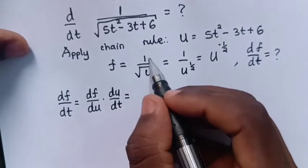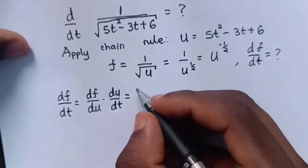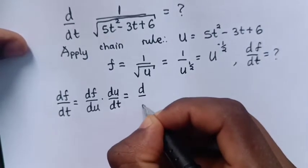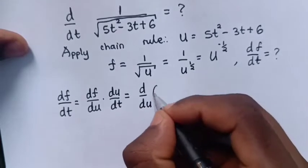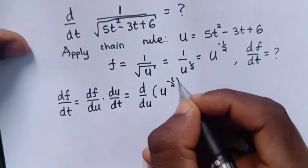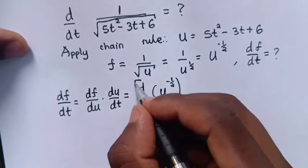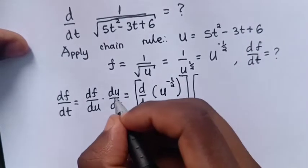f is this which is u^(-1/2). So, derivative of u^(-1/2) with respect to u times derivative of u with respect to t.